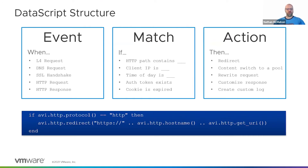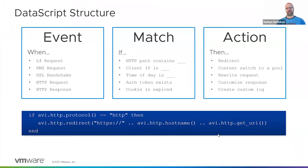The scripting looks something like this. It's based upon Lua, and we've added some additional functions or commands — avi.http, for instance. So if avi.http.protocol equals HTTP, then redirect to HTTPS, plus the host name the client requested, plus the URI the client requested. This is a very simple example of an HTTP redirect, but it could be something infinitely more complex.